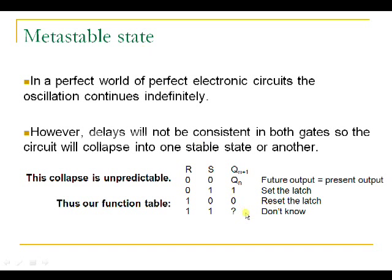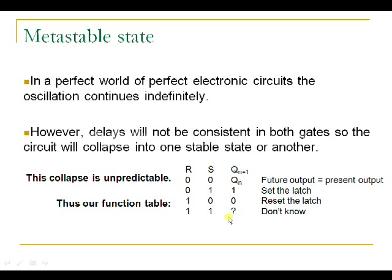Looking at the truth table again: if you give 0,0 the circuit holds the present state output. If you give 0,1, the output is 1 — this is called the set state. If you apply 1,0 it is called reset. And if you apply 1,1, it is an undetermined or indefinite state.